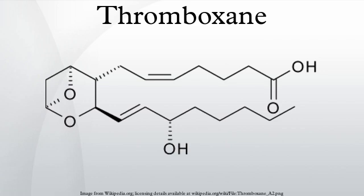Role of A2 in platelet aggregation: Thromboxane A2, produced by activated platelets, has prothrombotic properties, stimulating activation of new platelets as well as increasing platelet aggregation.